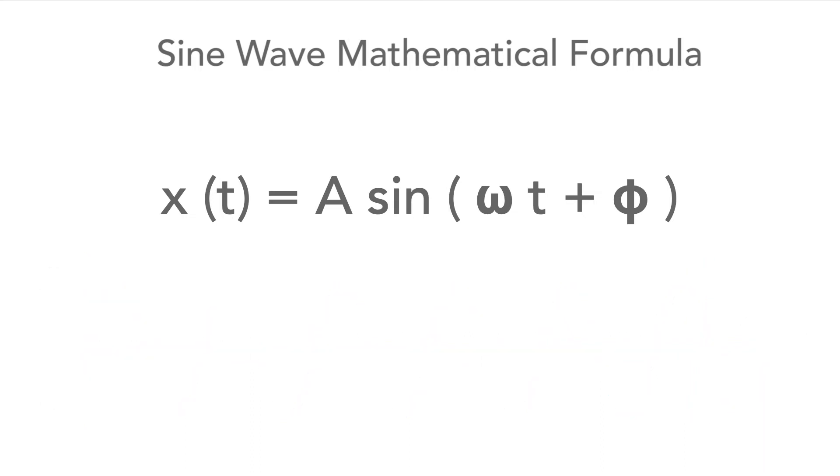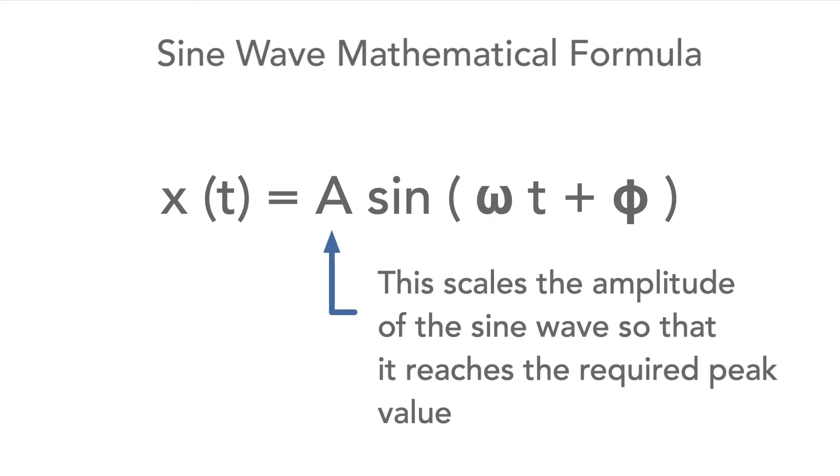The equation comprises several parts. The variable A for the amplitude scales the overall value so that when the sine is equal to one, its maximum value, the whole equation gives the required peak value.